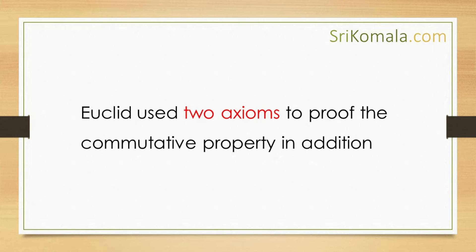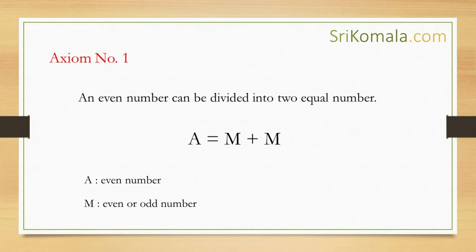In order to prove the commutative property in addition, Euclid of Alexandria used the following two axioms. Axiom number one: An even number can be divided into two equal numbers. Mathematically, this can be expressed as follows. Let us take A as an even number. Thus A can be stated as M plus M. Here M can be an odd number or an even number.